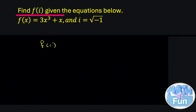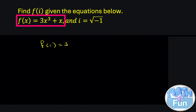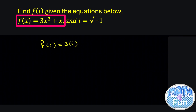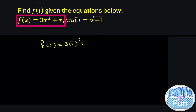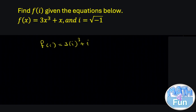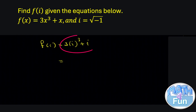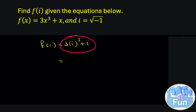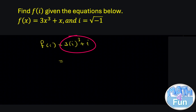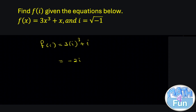So we write f(i) = 3 · i³ + i. Simplifying this by calculator, you can write the full expression and get 3i³ + i, which equals −2i.